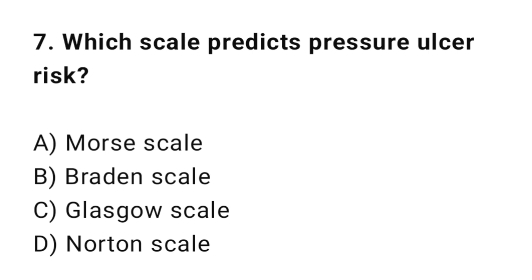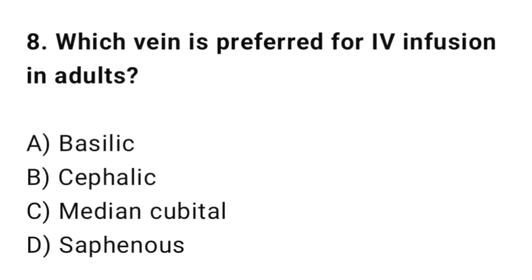Question 7: Which scale predicts pressure ulcer risk? The correct option is B: Braden's scale. Question 8: Which vein is preferred for IV infusion in adults? The correct option is B: Cephalic.